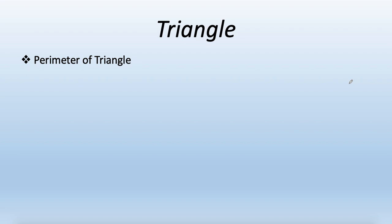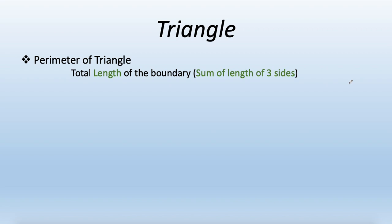The next thing is the perimeter of a triangle — the total length of the boundary, or the sum of the lengths of all three sides. For triangle ABC, the perimeter is AB plus BC plus AC.